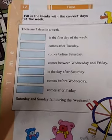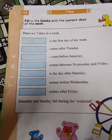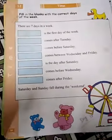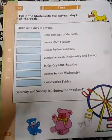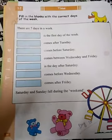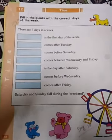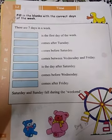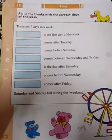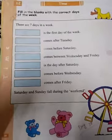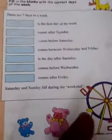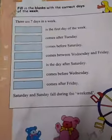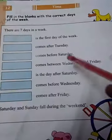Dakhou, aami toma der boyeer 54 number page da kule chi. Open your book at page number 54. Tumra toma der boyeer 54 page da kuleo. The title of the unit is time. A unit title ki — time mani shomoi.